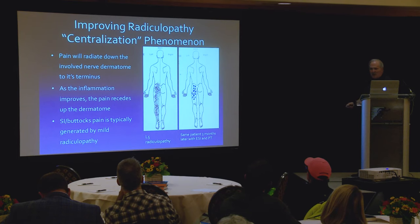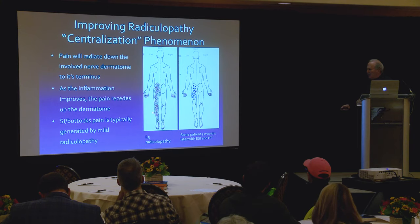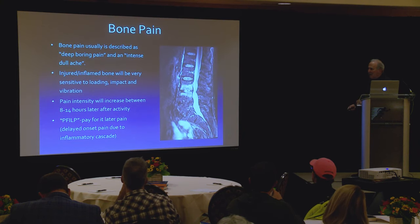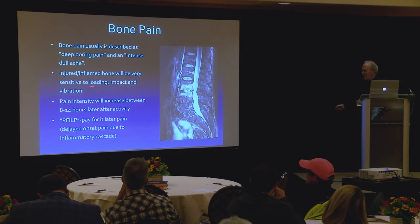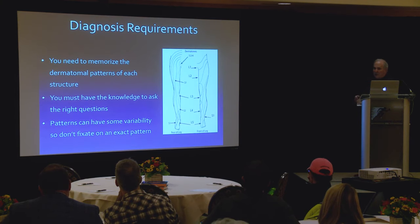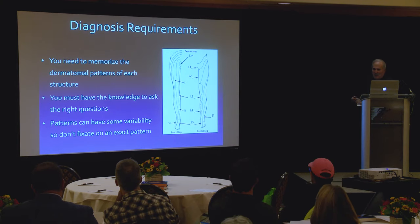Everybody has probably heard of the centralization phenomenon — associated with McKenzie. Someone has a significant radiculopathy, and as the nerve improves, the pain starts to recede. For example, an L5 radiculopathy three months later with an epidural and physical therapy shows the pain receding upward — that's a positive sign. Bone pain: deep, boring pain and intense dull ache. Inflamed and injured bone will be very sensitive to loading, impact, and vibration. Pain intensity will increase 8 to 14 hours later — the pay-for-it-later pain. You need to memorize the dermatomes, and how you test them is with a Wartenberg wheel — a little pinwheel you run through alcohol every time, used gently on the skin, because pinpoint measurements are much better than using a paper clip or fingers.